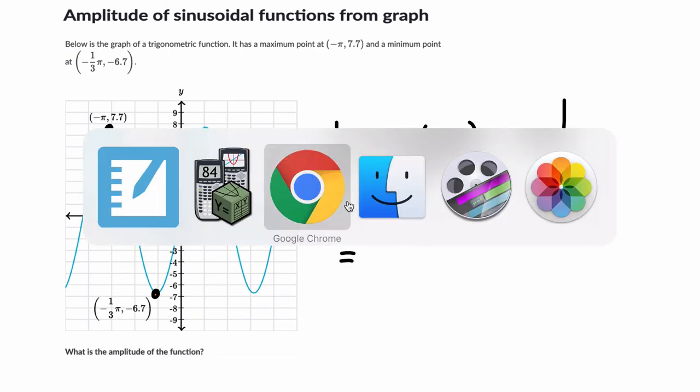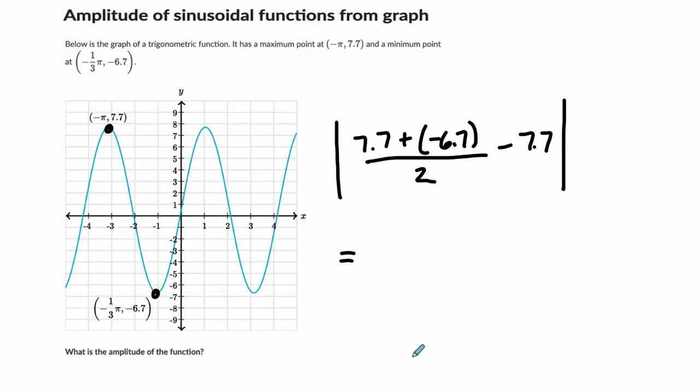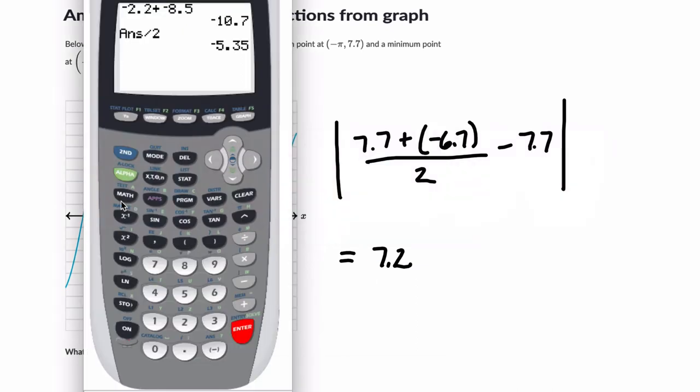Take out a calculator. Actually, you know what, I've already solved this, I've already figured it out. See if you can get it. Pause it, try it out. You should get 7.2, and this is the amplitude between your midline. You know what, I didn't calculate that, so let me do that. You should get 7.7 plus negative 6.7 divided by 2 is 0.5.